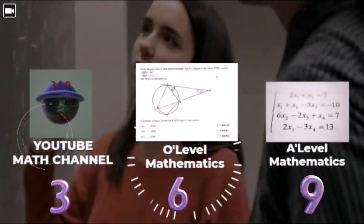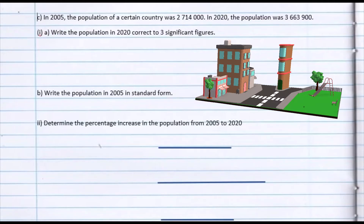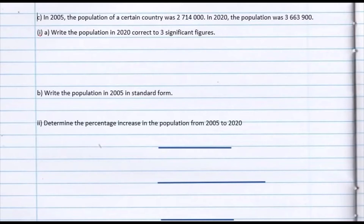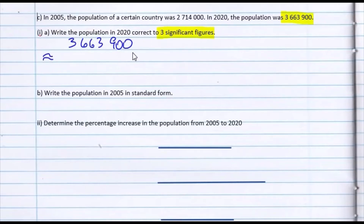Welcome to 369 Lennon Max. We're looking at part C of question 1. In the year 2005, the population of a certain country was 2,714,000. In the year 2020, the population was 3,663,900. We're asked to write the population for the year 2020 correct to 3 significant figures. So we're going to take that figure of 3,663,900 and approximate it in significant figures.